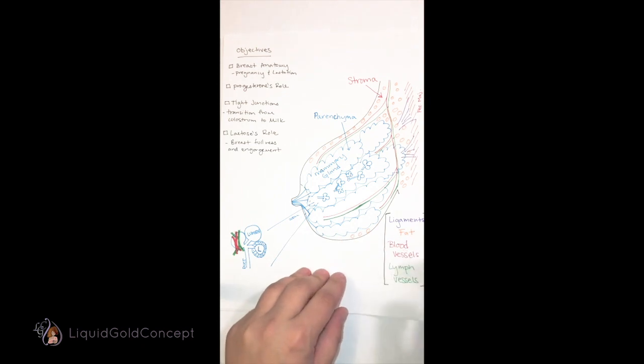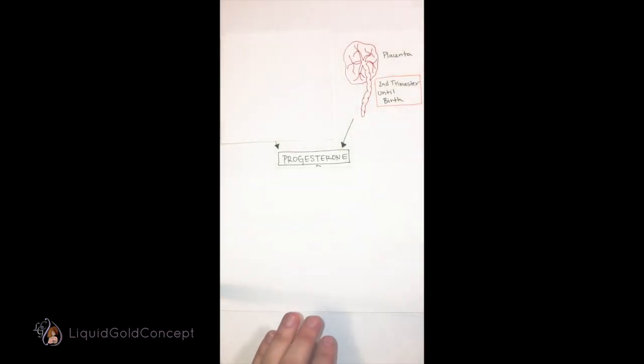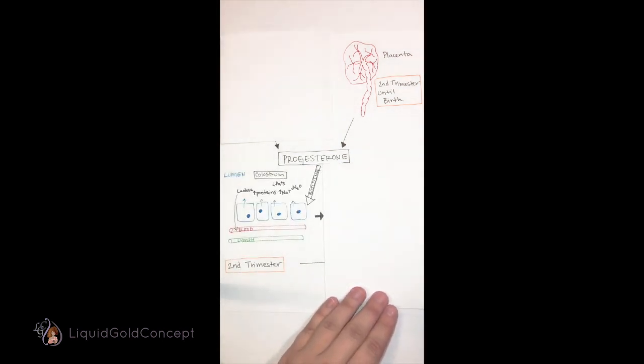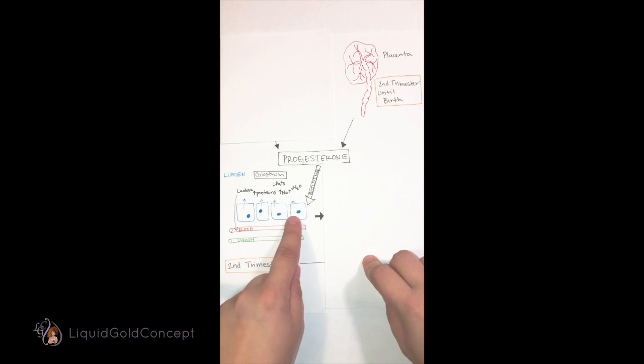By the second trimester, the mammary epithelial cells have differentiated and developed the machinery to produce the components of milk: sugar, proteins, and fats.